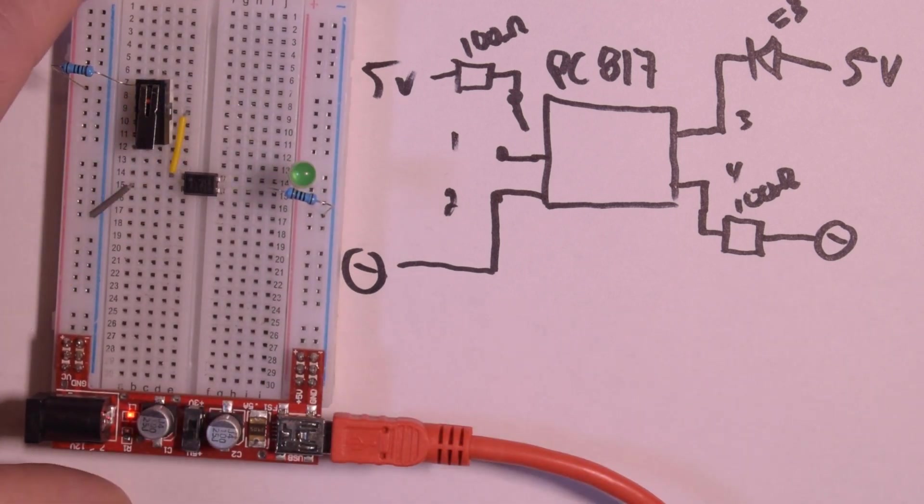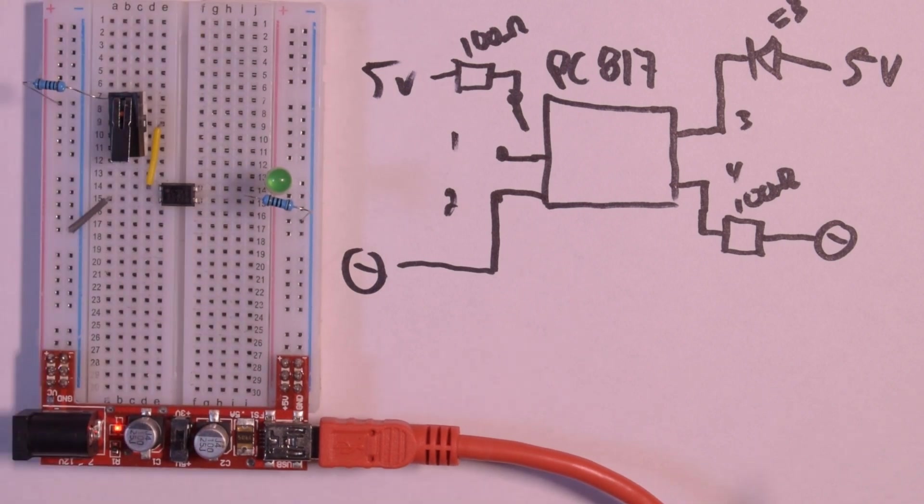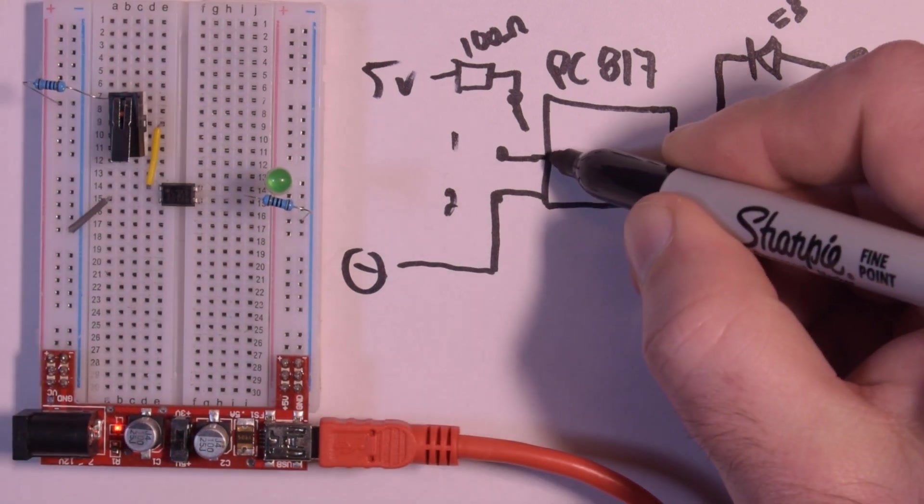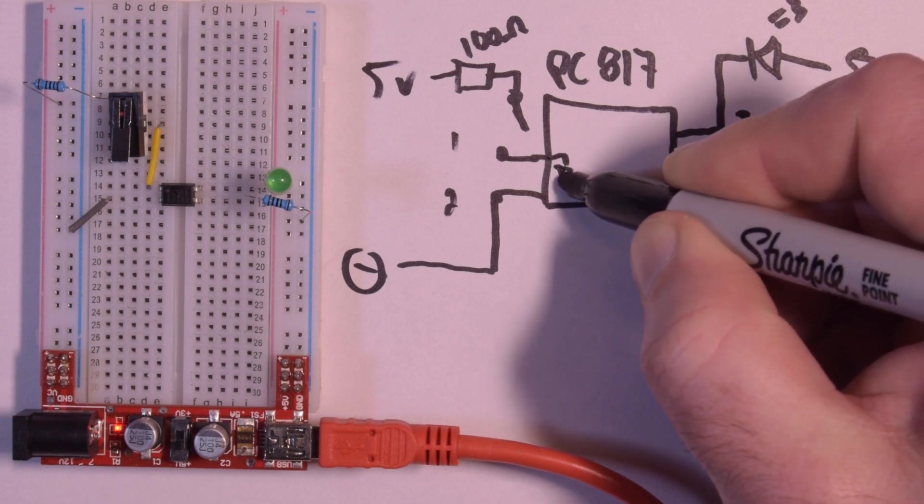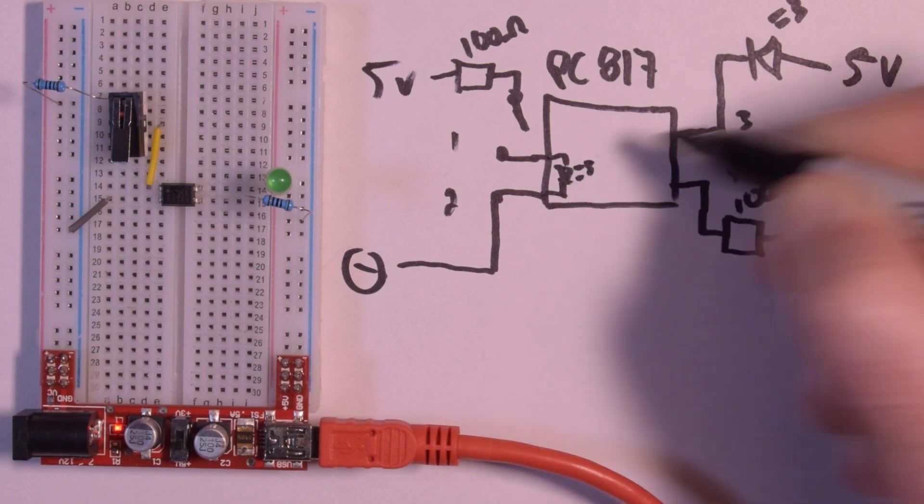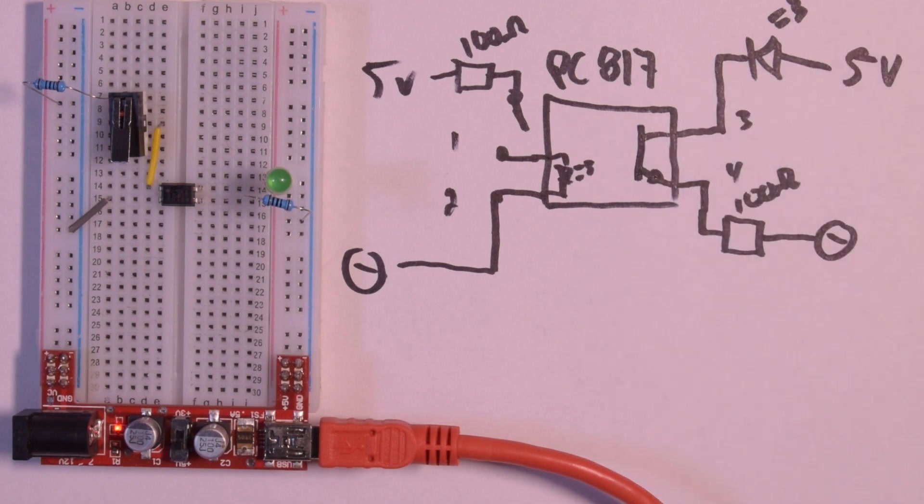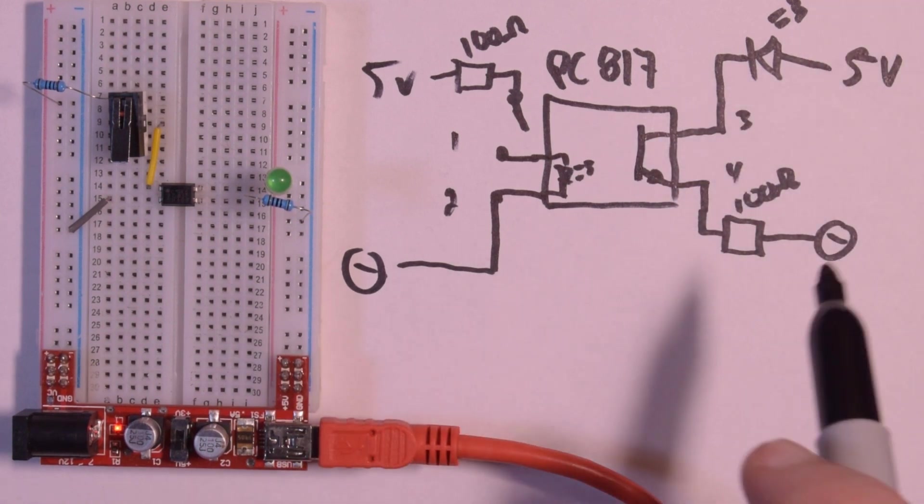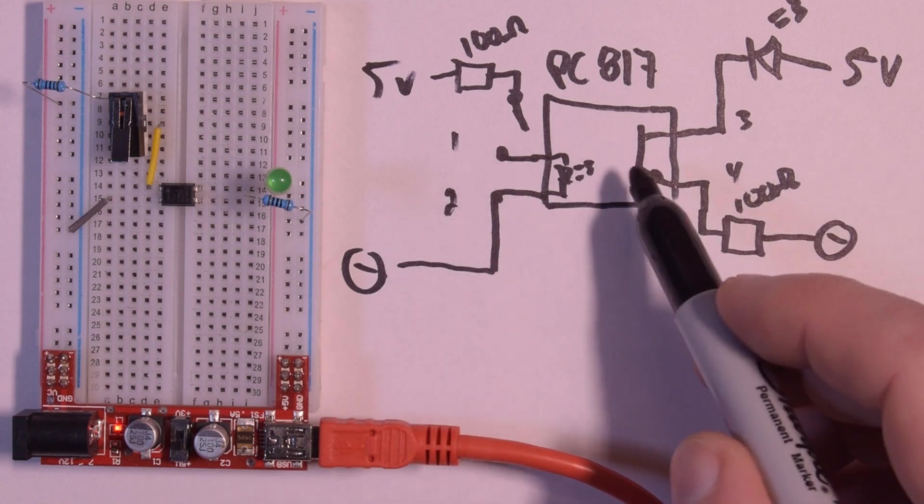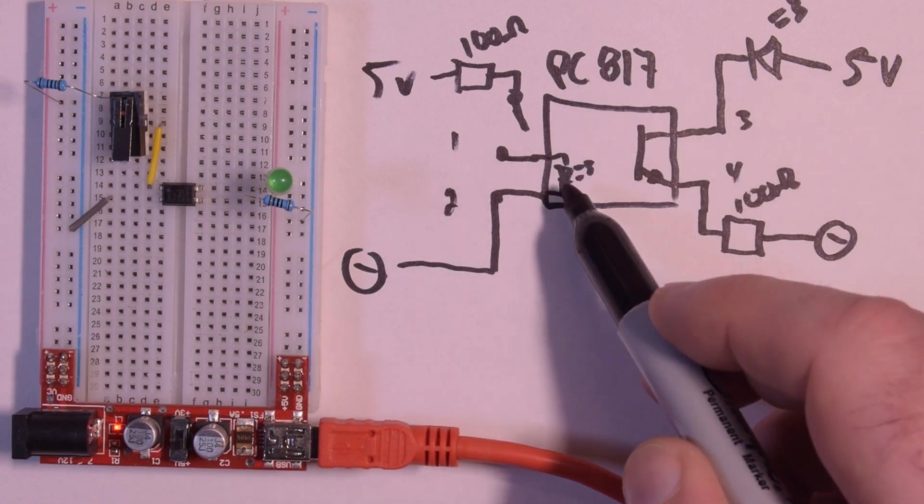So you only see one LED come on, we only have the one LED, but why is this working the same as our previous circuit? Well that's because on the inside here we have an LED, and on the inside here we have a transistor.